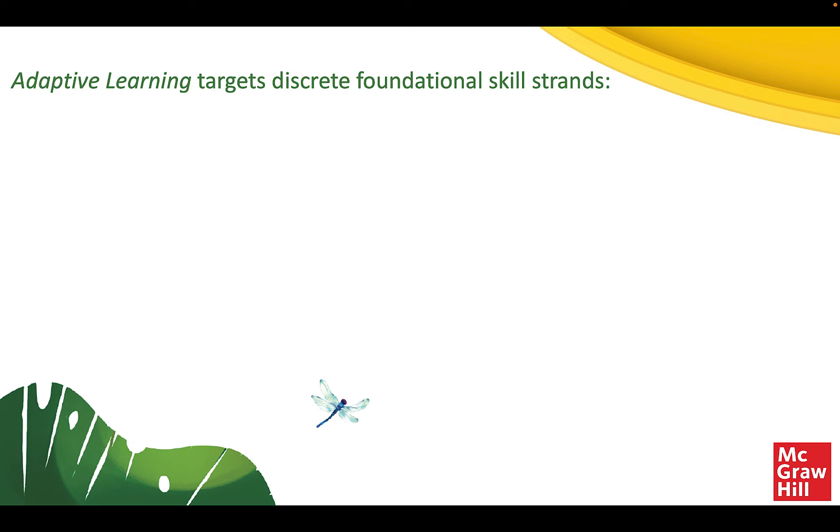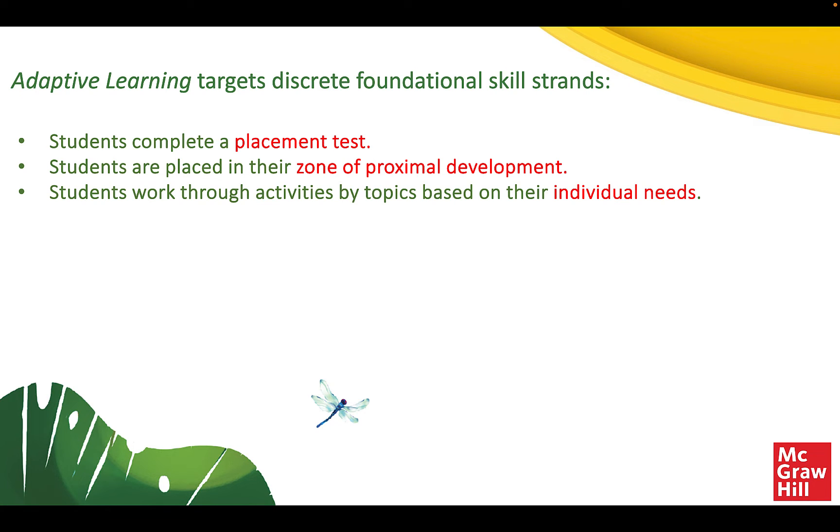The adaptive learning system targets these discrete foundational skill strands first by having students engage in a placement test. Based on the results of that placement test, students are placed in their zone of proximal development. Then students will be able to work through a series of activities by topics based on their individual needs. Students must complete prerequisites for each skill group in order to progress to the next set of skills.